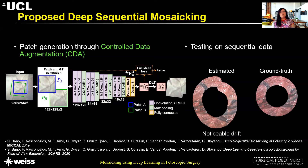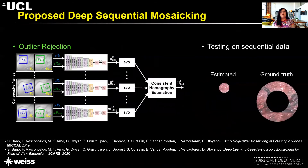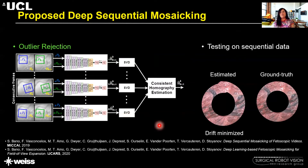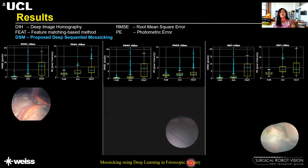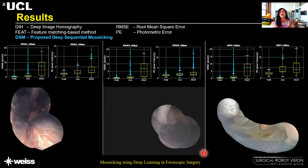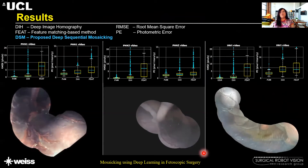To further improve results we proposed outlier rejection at test time. Given a pair of consecutive frames, we extract several pairs of patches at random, obtain the four-point homography for each, and apply a median filtering stage to obtain the most consistent homography estimate. This significantly minimized the drifting error. We tested this approach on five diverse datasets ranging from synthetic data to ex-vivo, phantom, and in-vivo data.